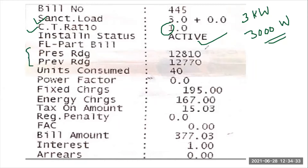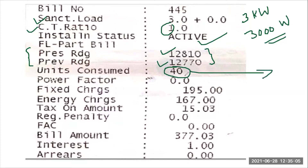To find the units consumed, you look at the previous and present meter readings. The present reading is 12810 units and the previous reading is 12770 units. The difference between the present and previous readings is 40 units, which is the energy consumed during that billing duration.